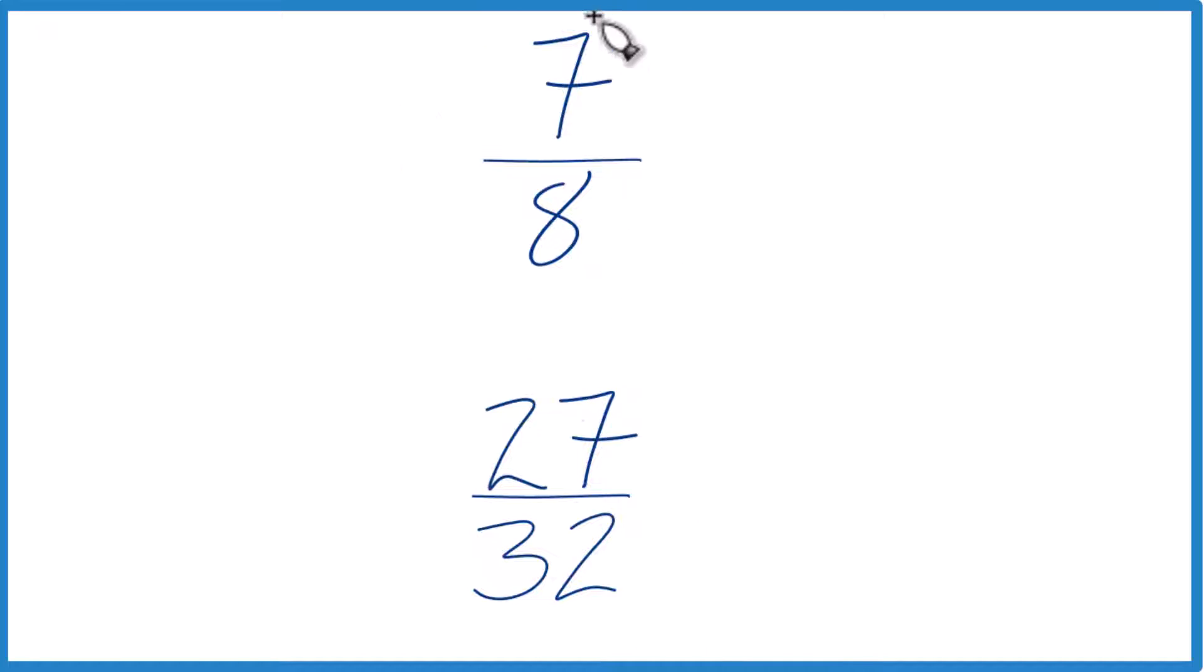You could just take a calculator, divide 7 by 8, get a decimal, 27 divided by 32, get a decimal, and that would tell you the answer. But you wouldn't know exactly how much bigger in terms of a fraction.